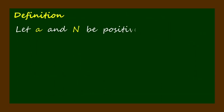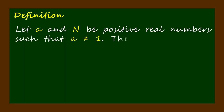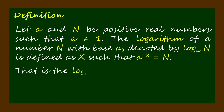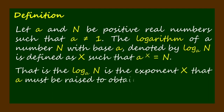Definition: Let a and n be positive real numbers such that a is not equal to 1. The logarithm of a number n with base a, denoted by the logarithm of n to the base a, is defined as x such that a to the x power equals n. That is, the logarithm of n to the base a is the exponent x that a must be raised to in order to obtain n.